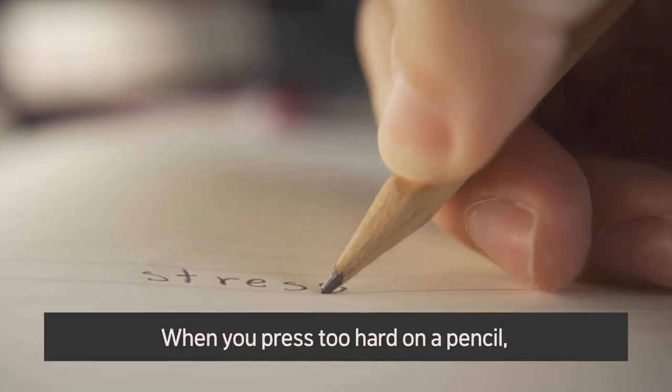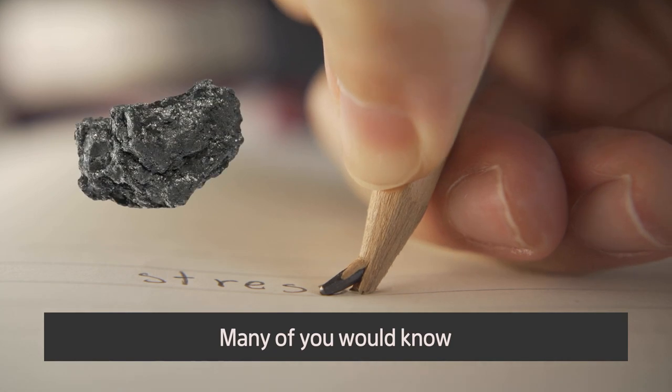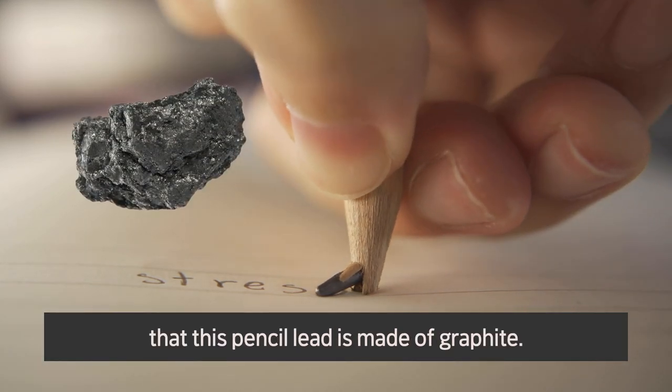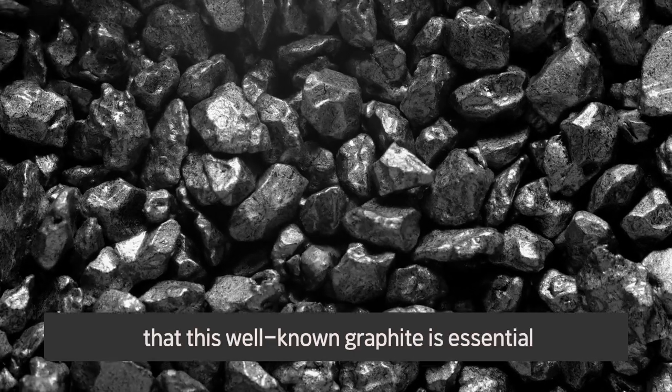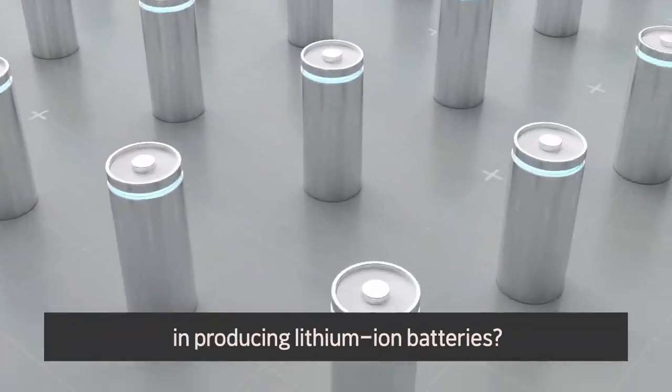When you press too hard on a pencil, the pencil tip you carefully sharpened used to snap. Many of you would know that this pencil lead is made of graphite, but did you also know that this well-known graphite is essential in producing lithium-ion batteries?